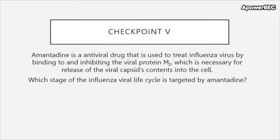Checkpoint five: Amantadine is an antiviral drug used to treat influenza virus by binding to and inhibiting the viral protein M2, which is necessary for release of the viral capsid contents into the cell. Which stage of the influenza viral life cycle is targeted by amantadine?